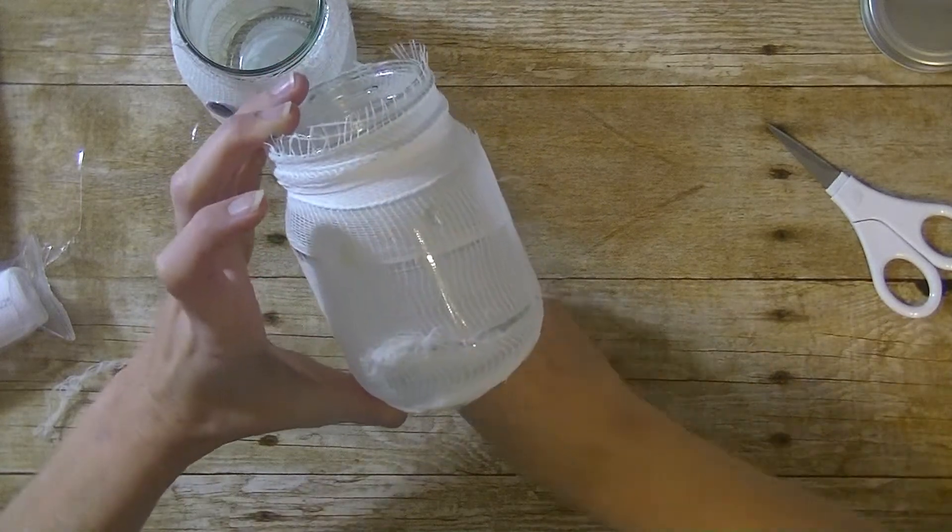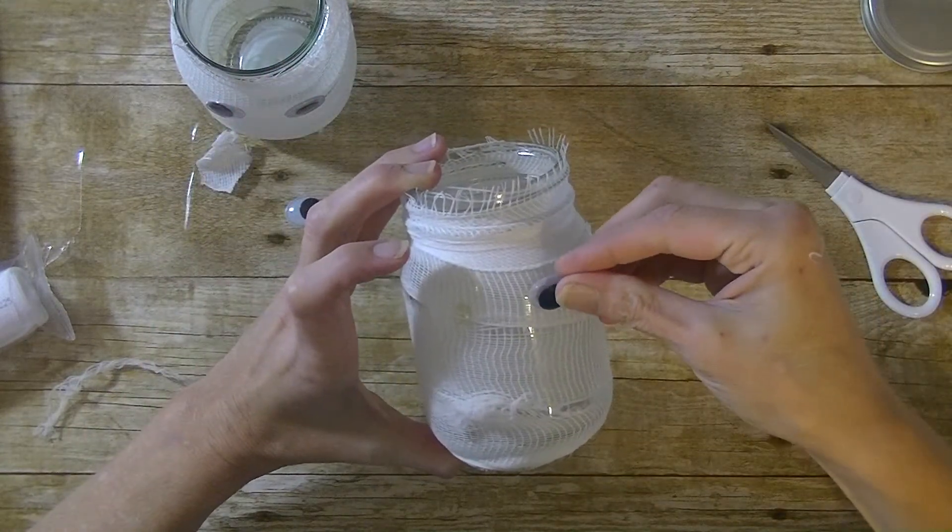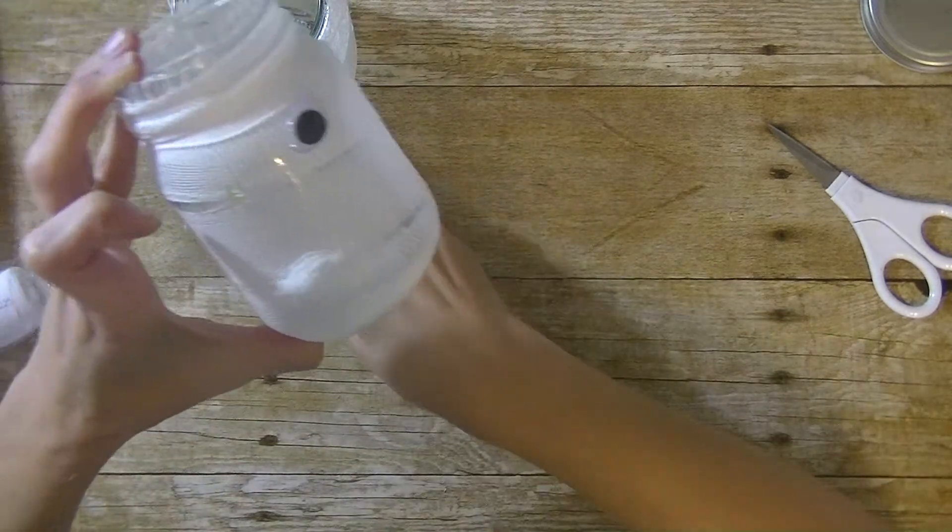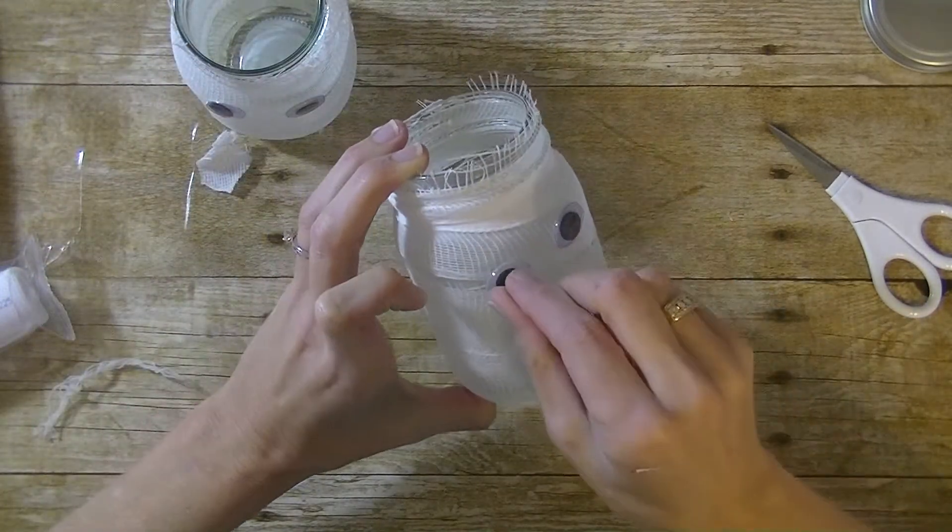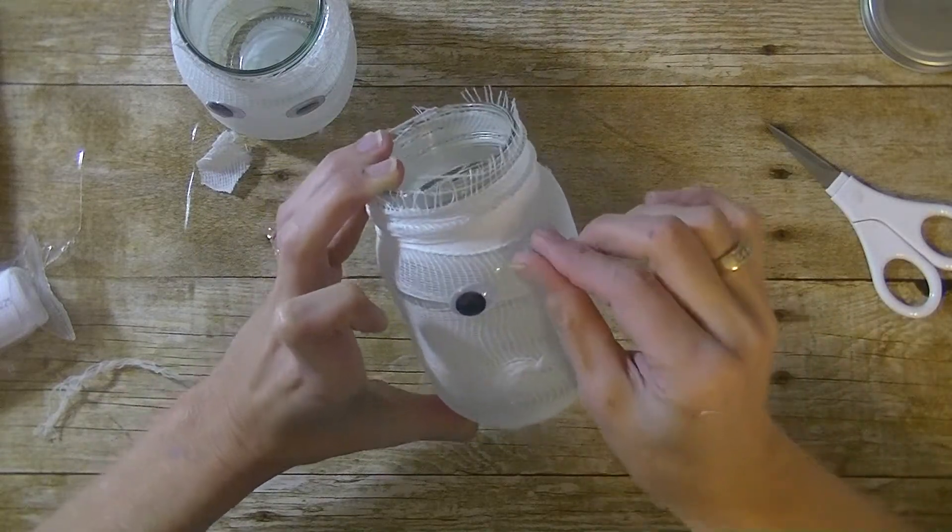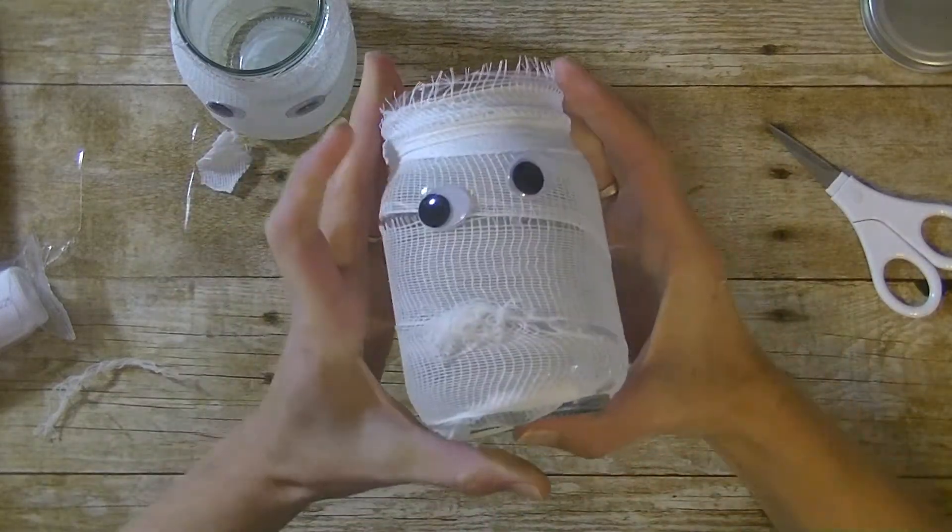This can also be a ghost. You can cut out a circle in cardstock for a ghost mouth. But really simple and very inexpensive. Like I said, all these things we bought from the dollar store or dollar general. And there you have it. Isn't that cute?